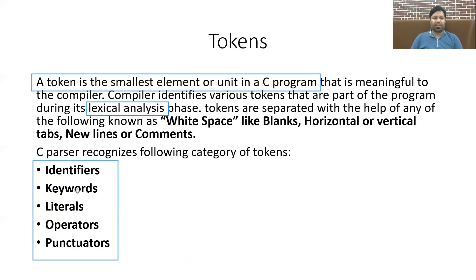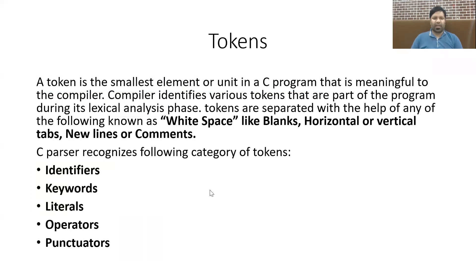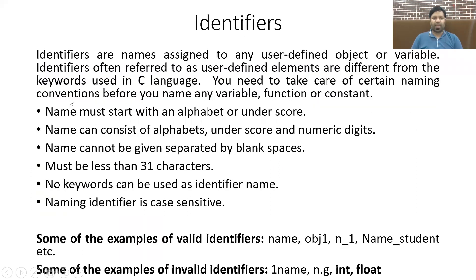Identifiers are names assigned to any user-defined object or variable. Within a program, if you want to work on certain values, you need to save those values inside a variable. If you are using two or three variables, you should be able to identify the different variables.